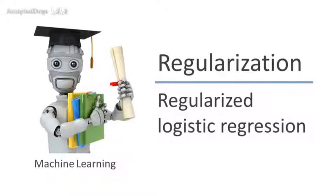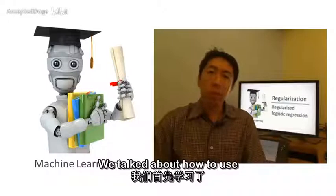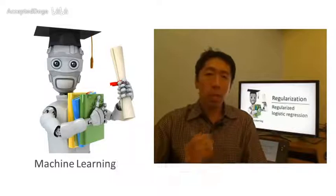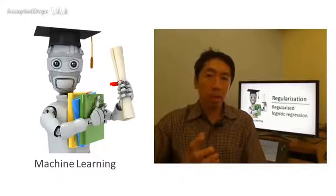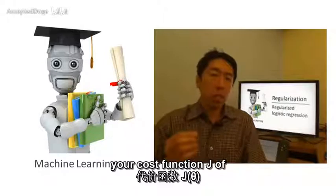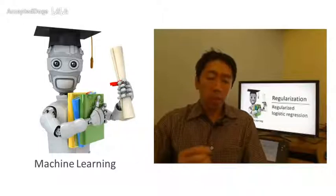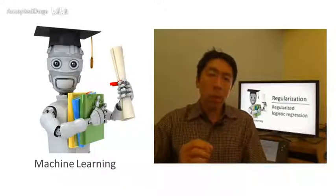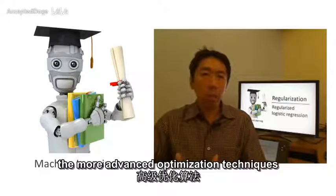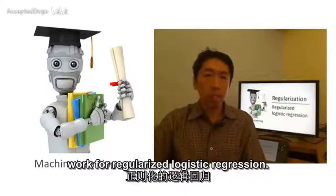For logistic regression, we previously talked about two types of optimization algorithms. We talked about how to use gradient descent to optimize the cost function J(θ), and we also talked about advanced optimization methods that require you to provide a way to compute the cost function J(θ) and the derivatives. In this video, we'll show how you can adapt both techniques, gradient descent and the more advanced optimization techniques, to work for regularized logistic regression.